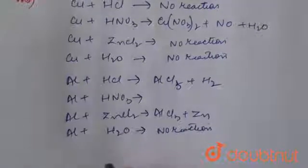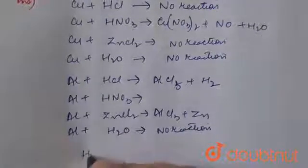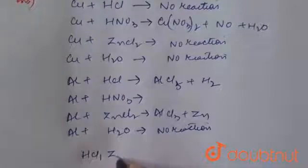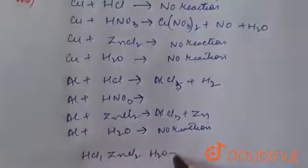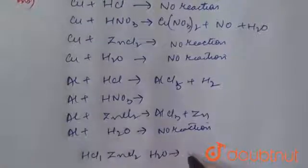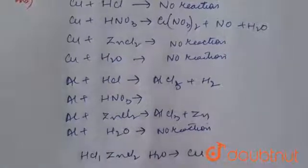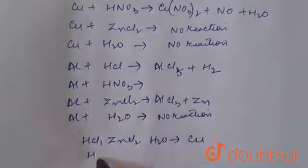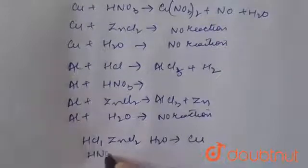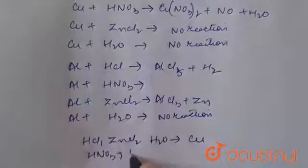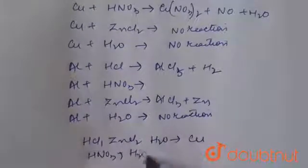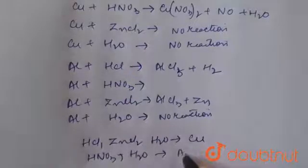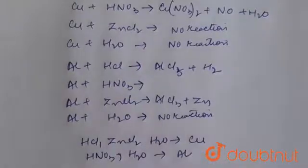From this, we conclude: hydrochloric acid, zinc chloride, and water can be stored in the copper container; and nitric acid and water can be stored in the aluminium container. Thank you!